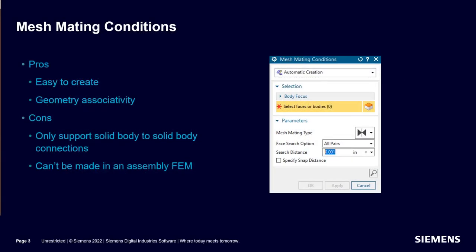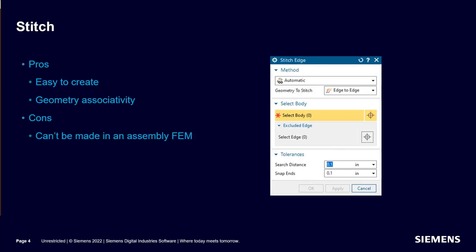Today we'll look at different connection methods available in Simcenter 3D. Mesh Mating Conditions are great for creating connections across solid bodies. However, they can't be made across different solid bodies in different component finite element models in an assembly finite element model. Ditching is a very powerful way to connect multiple sheet bodies with a congruent mesh, but as with mesh mating conditions, this cannot be accomplished in an assembly finite element model.